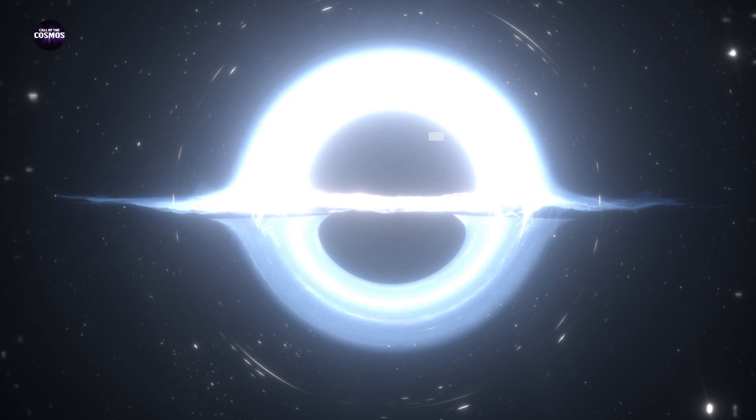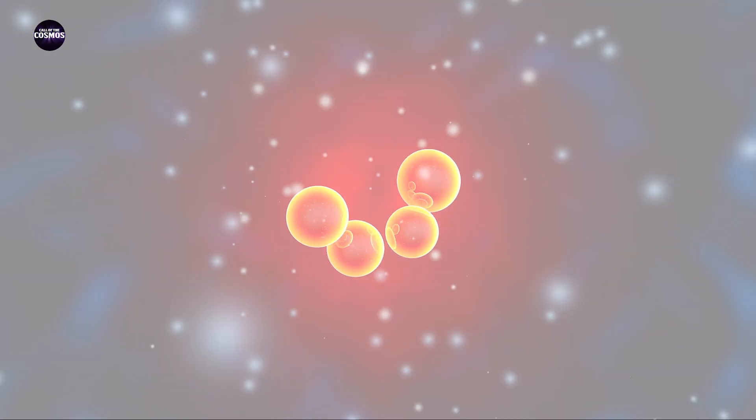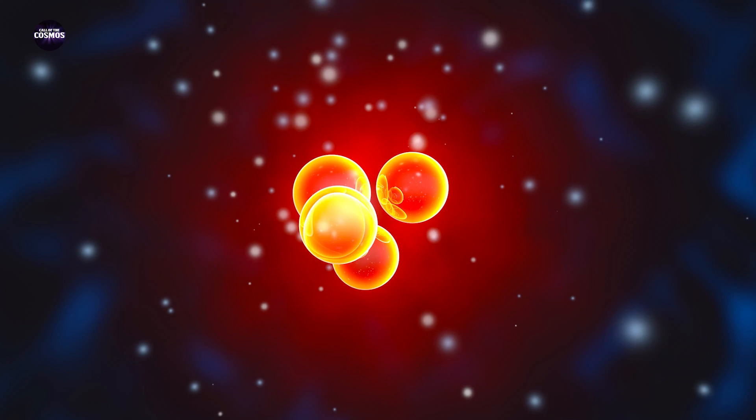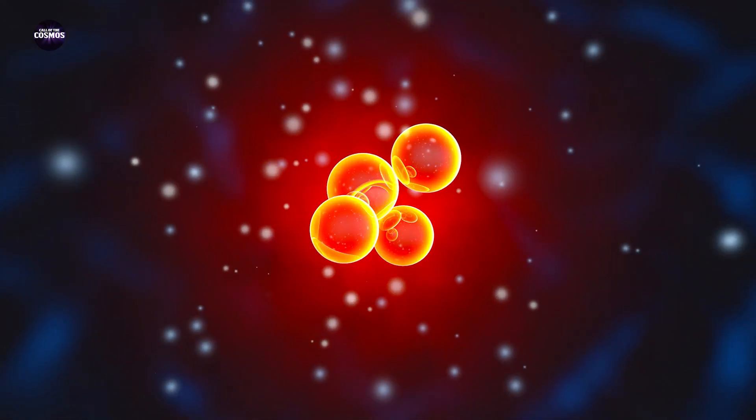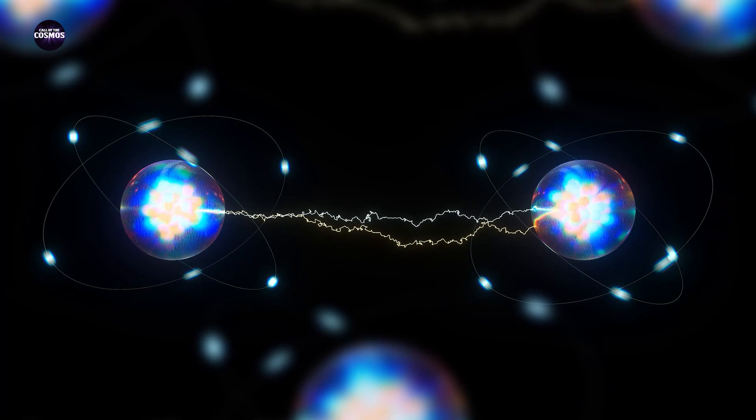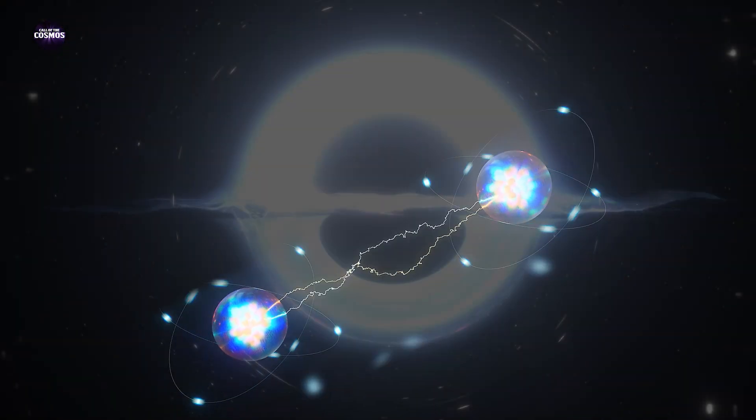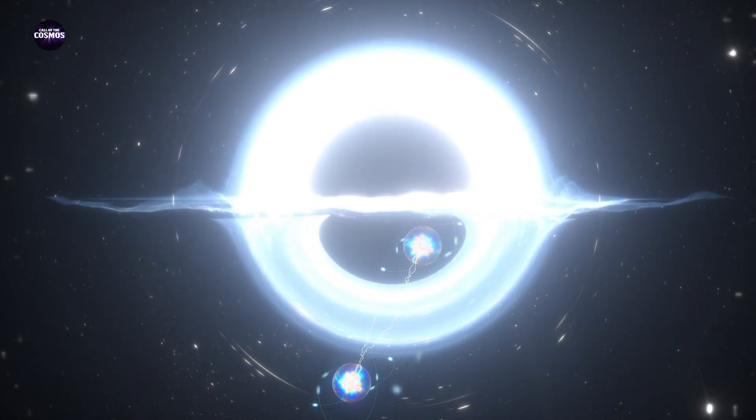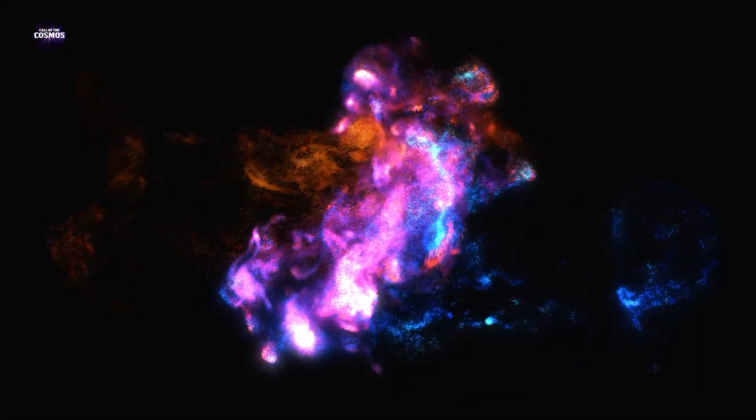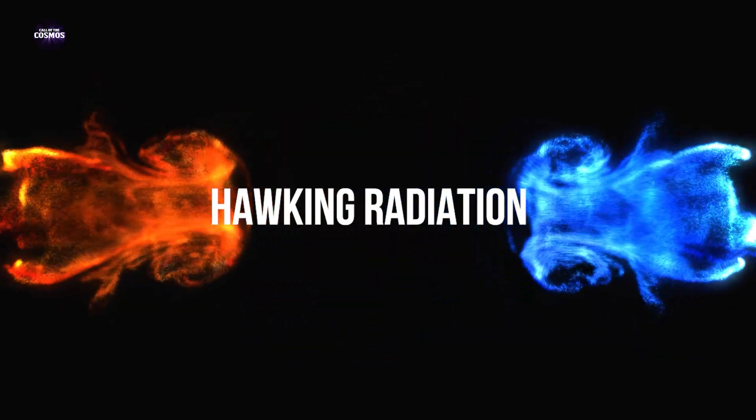Hawking's theory goes like this. The space we consider empty is not actually empty. In the domain of quantum mechanics, such a space would be composed of particles and antiparticles popping in and out of existence. Now if such a particle-antiparticle pair is created at the edge of a black hole's event horizon, one of the particles will be smacked clean by the giant that is the black hole, while the other will escape. It will appear as if the black hole has radiated a particle away in what is now known as Hawking radiation.